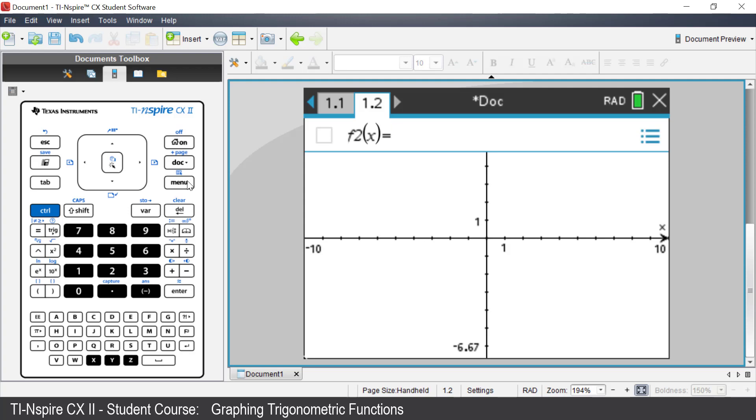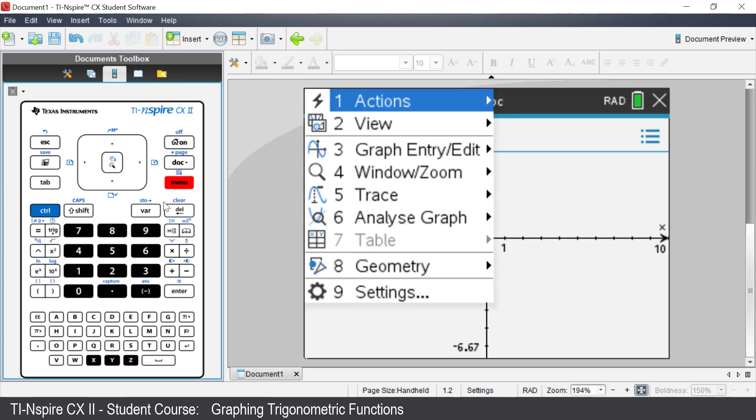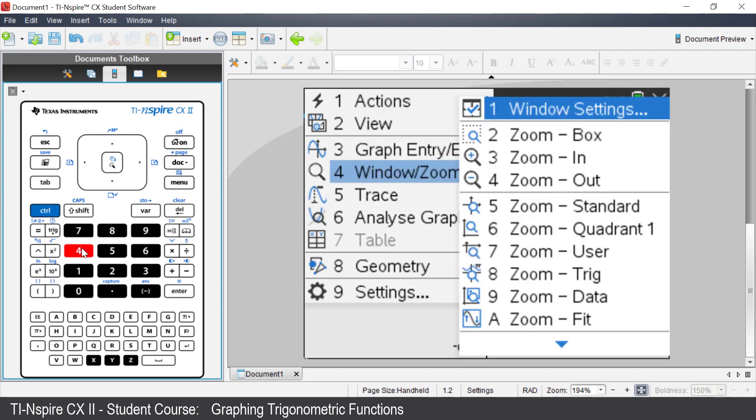Press Menu. Select Window Zoom. Select Window Settings.